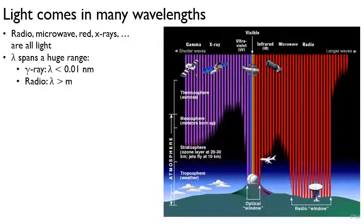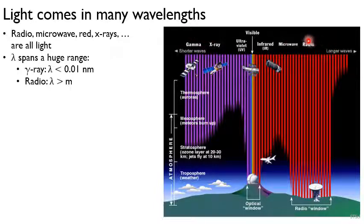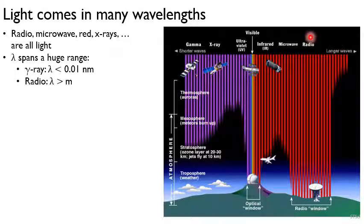Light comes in many different wavelengths. This is known as the electromagnetic spectrum, and you have a huge span of wavelengths. We name different regions depending on wavelength, and they're not all of equivalent width. Radio spans everything bigger than a meter or so — a whole lot of radio spectrum — which is why we split it into shortwave, AM, and FM.